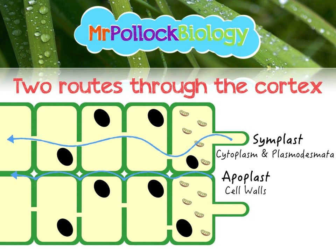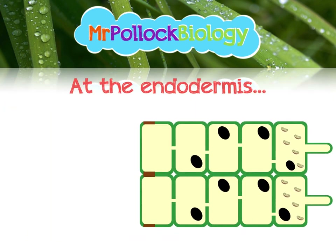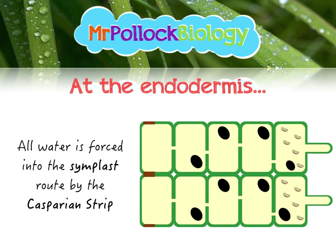Once we've gone all the way through the cortex, we reach an area called the endodermis. Here, all of the water is forced into the symplast route by something called the Casparian strip, which is basically a waterproof region in the cell walls that forces the water through. This is usually comprised of a compound called suberin, or sometimes lignin, which is a waterproof substance.